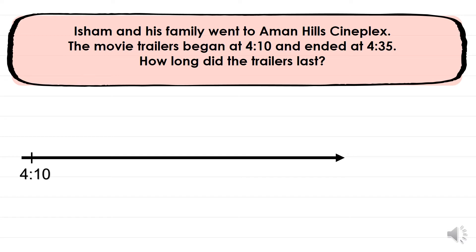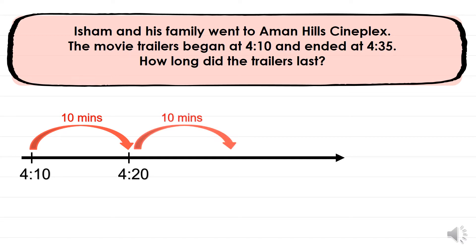Let's do the number line first. We're going to skip on a number line by using whatever number is easiest for us to count by. So if I'm starting at 4:10, because the trailers began playing at 4:10, and I jumped 10 minutes, my new time would be 4:20. I'm going to keep skipping until I get to my end time, which is 4:35. Next, I'm going to jump 10 more minutes, giving a new time of 4:30.